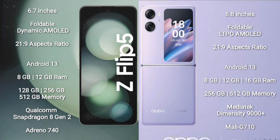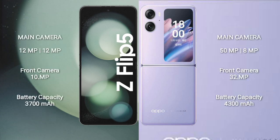The Oppo Find N2 Flip comes with 8GB, 12GB, or 16GB RAM and 256GB or 512GB internal storage, with a MediaTek Dimensity 9000 Plus processor and Mali-G710 GPU. For cameras, the Samsung Galaxy Z Flip 5 has a dual rear setup of 12MP plus 12MP and a 10MP front camera. The Oppo Find N2 Flip has a dual rear setup of 50MP plus 8MP and a 32MP front camera.